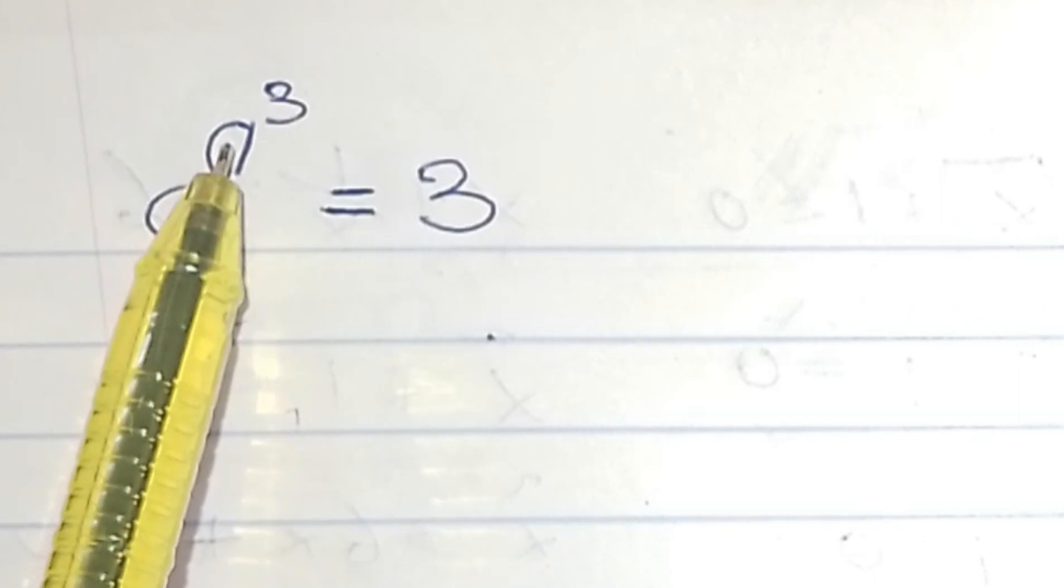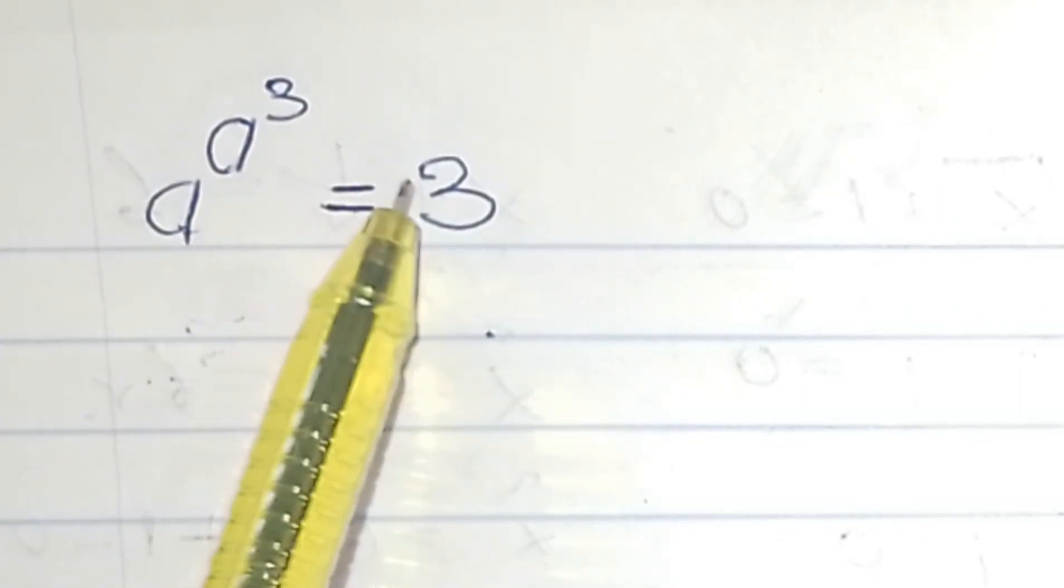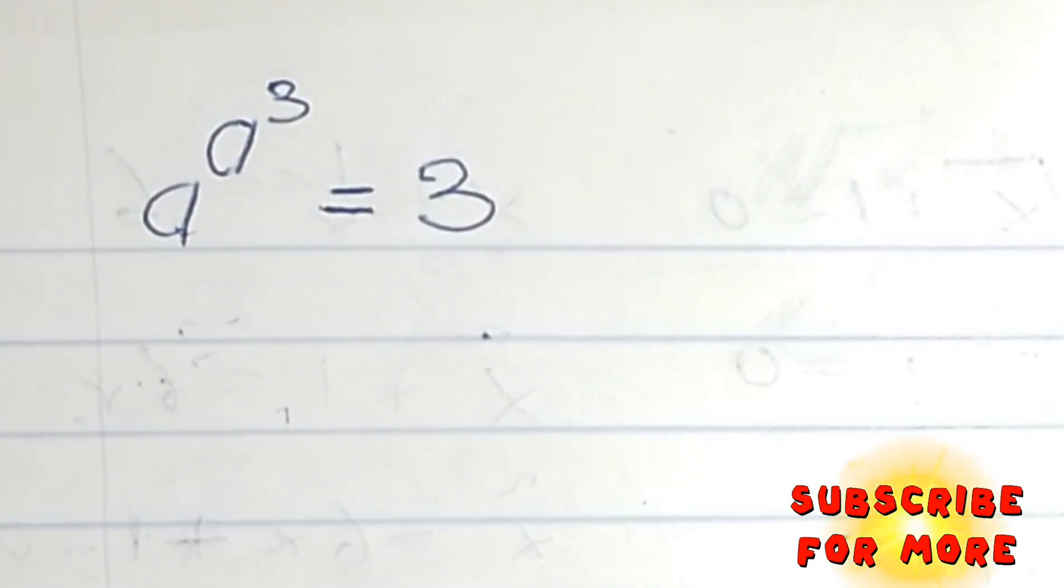A to an exponent of A to an exponent of 3 is equals to 3. So we shall see the real value of A in this solution. Let's get started.